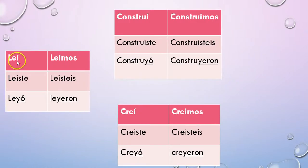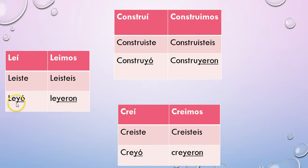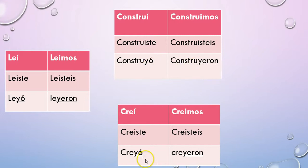Let's look at what these look like. For LEER: leyí, leíste — completely regular. In the él form I've changed my I to a Y, which is where the 'I to Y' term comes from. The reason I change the I to a Y is because if I had L-E-I-O I would have three vowels right next to each other, and in general I want to avoid having three vowels. So the forms are leí, leíste, leyó, leímos, leísteis, and leyeron — with the I to Y change only in the él/ella and ellos/ustedes forms.